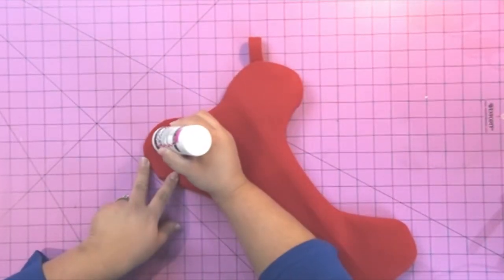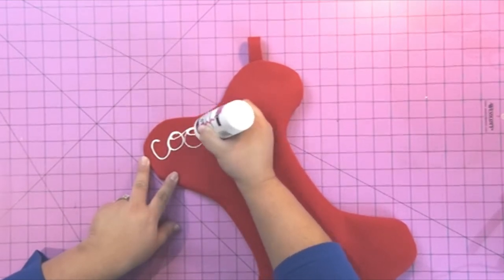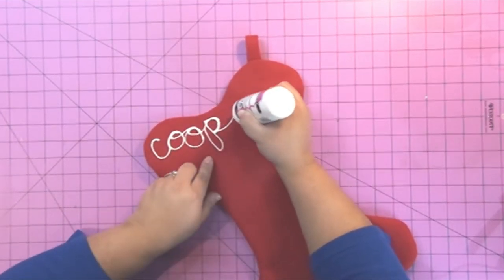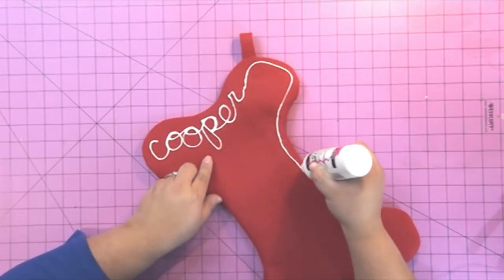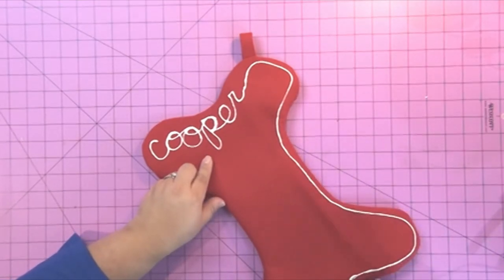Next I'm going to use some puffy paint—this is slick fabric paint from Tulip—to write the pet's name and then create this fun little candy stripe outline.